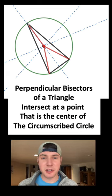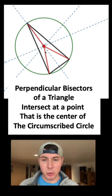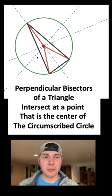In summary, the perpendicular bisectors of a triangle intersect at a point that is the center of the circumscribed circle.